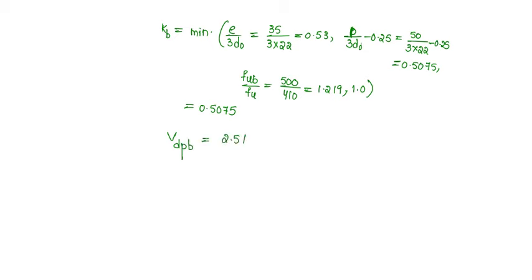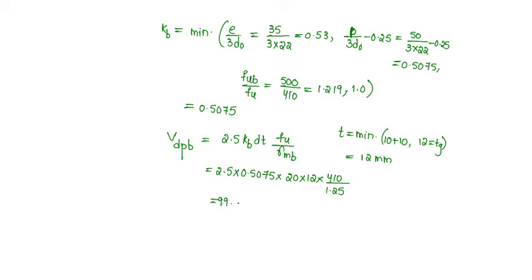The design bearing capacity of the bolt will be equal to 2.5 Kb dt into FU by gamma MB, where T is minimum of the gusset plate thickness 10 plus 10 or the angle thickness, so minimum is 12 mm. Substituting 2.5 into Kb is 0.5075 into diameter of bolt is 20 into T is 12 into FU is 410 by gamma MB is 1.25, so that will be equal to 99.876 kilonewtons.